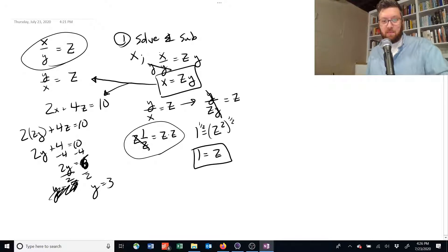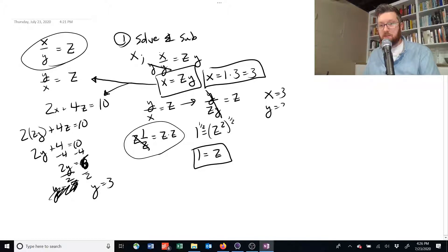And now we can look back up here, and we had that x is equal to z times y. So x is equal to z, which is 1, times y, which is 3. So x is equal to 3. We've achieved what we wanted to do. We've got x equal to 3, y is equal to 3, and z is equal to 1.